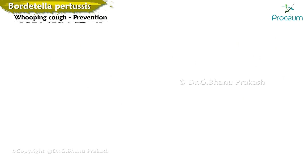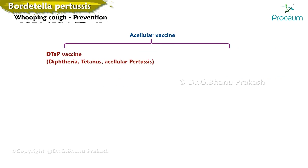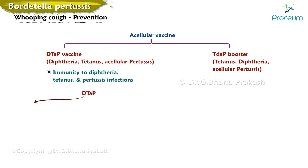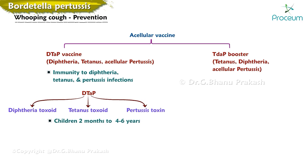An acellular vaccine has been developed to prevent pertussis infection. The DTaP vaccine elicits immunity to diphtheria, tetanus, and pertussis and consists of diphtheria toxoid, tetanus toxoid, and various pertussis antigens including pertussis toxin. It is given as a series starting at age 2 months and ending at age 4 to 6 years. The TDaP vaccine is a one-time booster usually given at age 11 to 12 years and every 10 years thereafter.